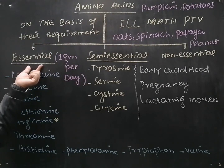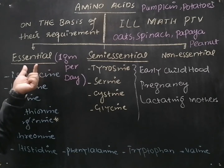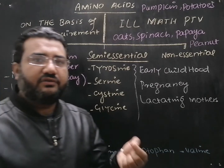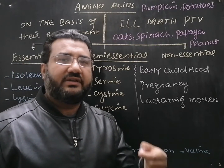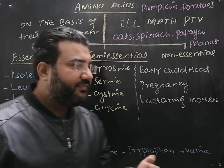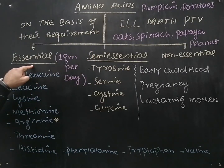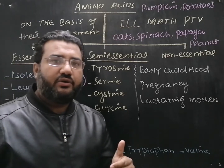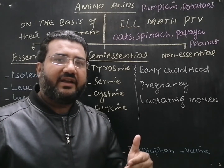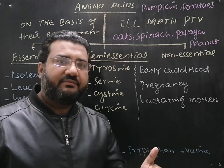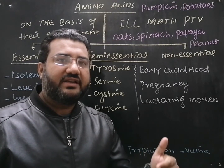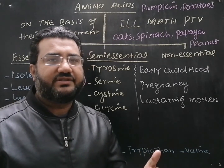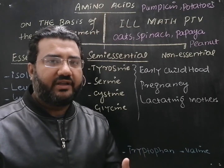Essential amino acids are those which are not naturally synthesized in our body, so we need to take them through our diet. The amount required is one gram per day. In order to live a healthy life, one gram per day is the amount of essential amino acids required in the body.